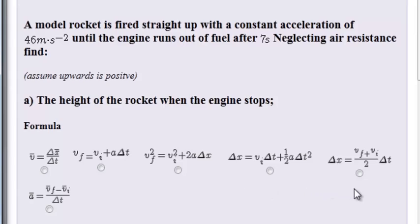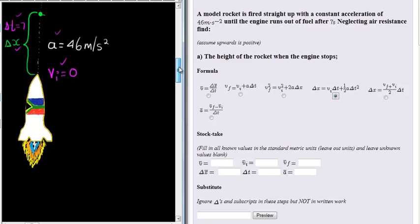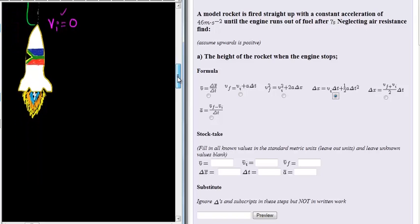Looking at our formulas I see this one will work: delta X, initial velocity, delta T, acceleration, and delta T again. Okay, so that's going to be the formula that we are going to use.